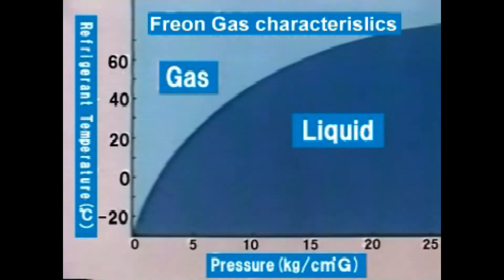The graph here indicates the refrigerant characteristics. The curve follows the borderline figures at which the refrigerant is gasified or liquefied.